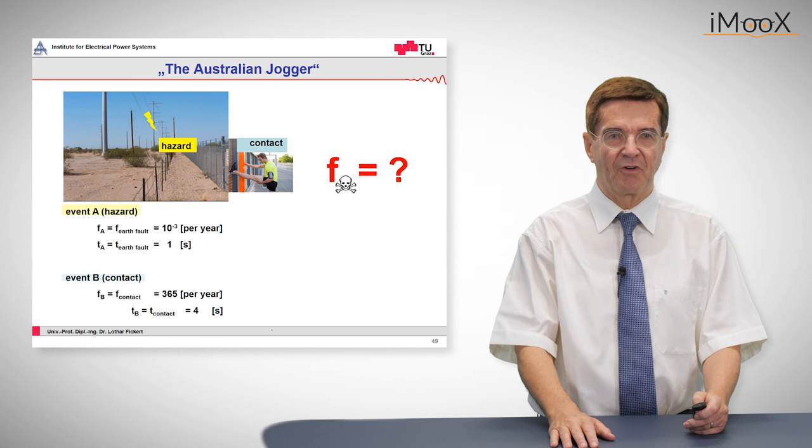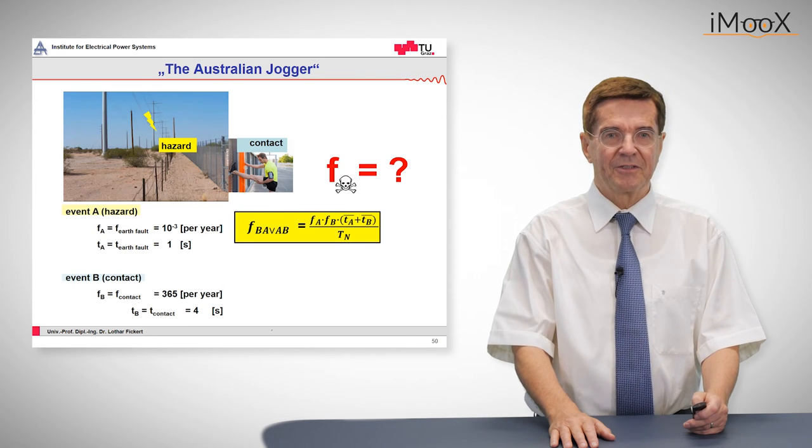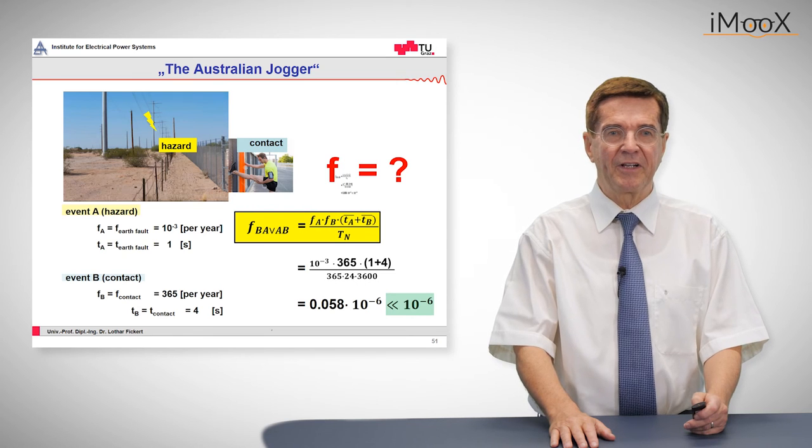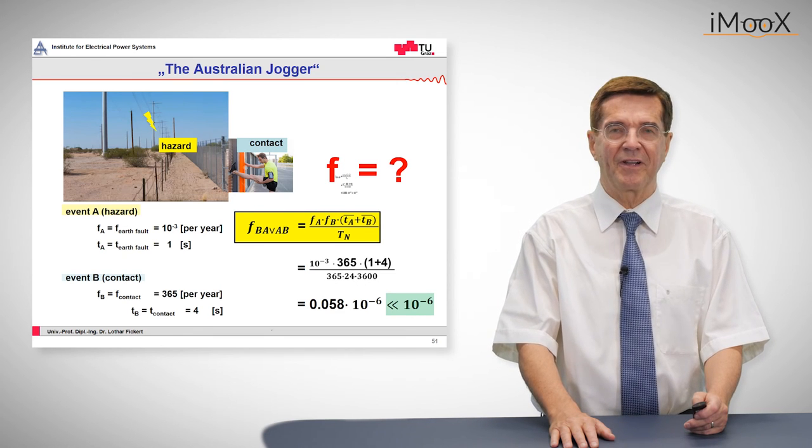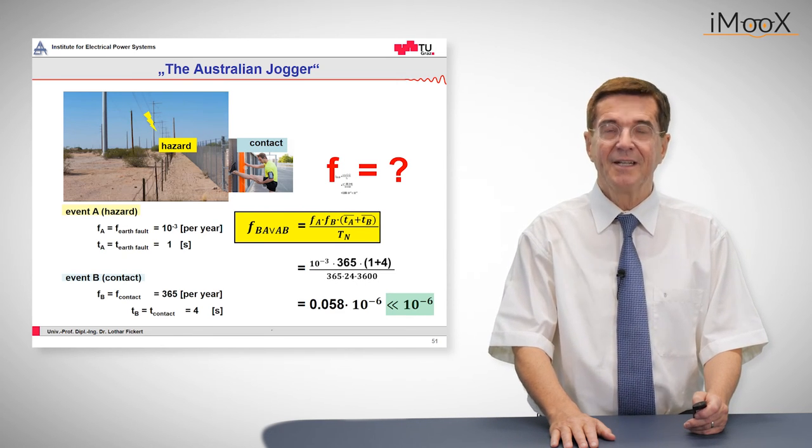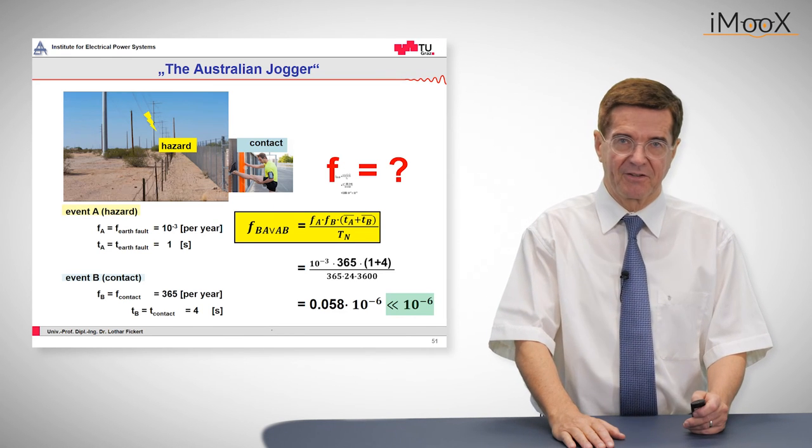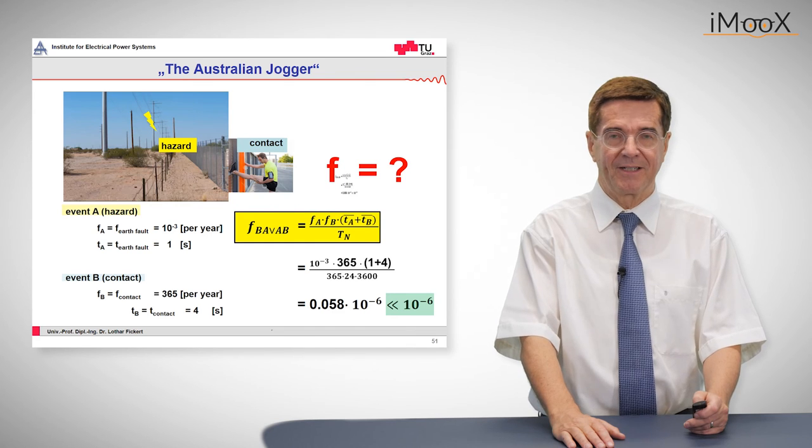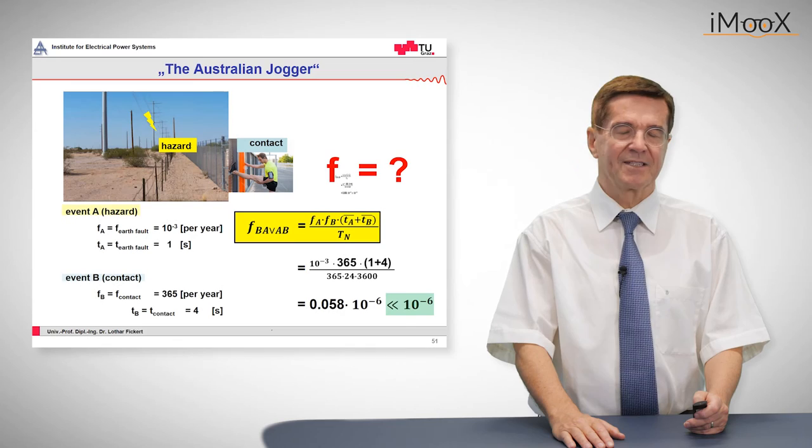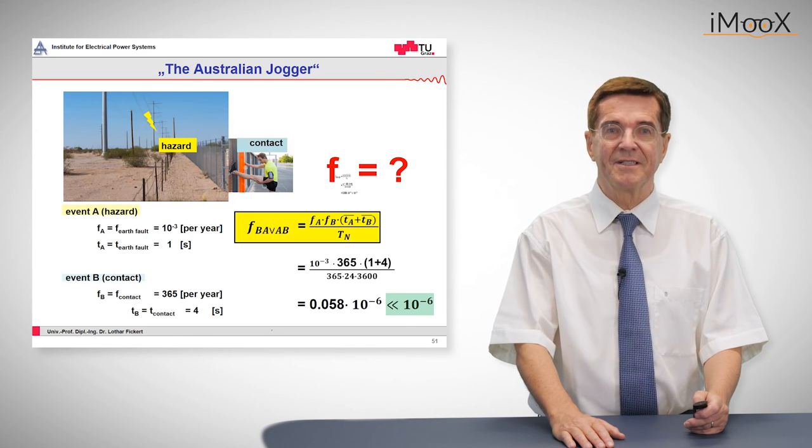Now we go into this formula. And when we do this we arrive at the figure of 0.058 times 10 to the minus 6 which is well below the sometimes called magical threshold of 10 to the minus 6 which is regarded as more or less acceptable residual risk.